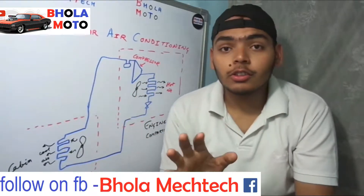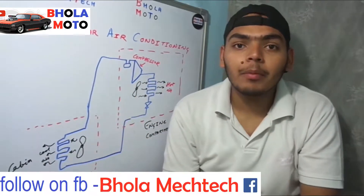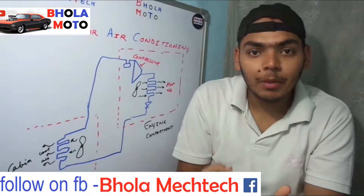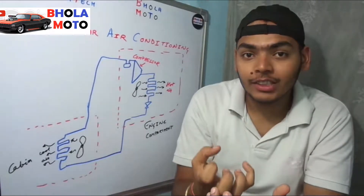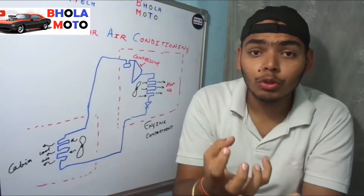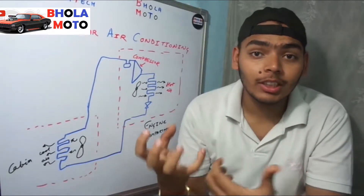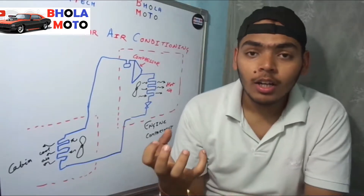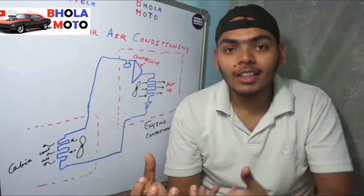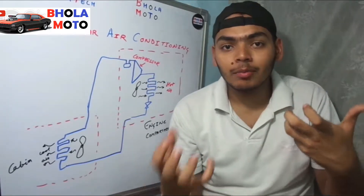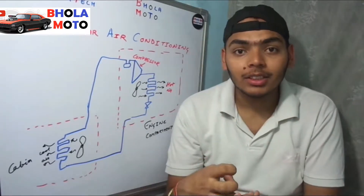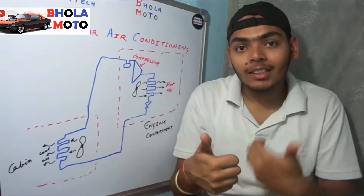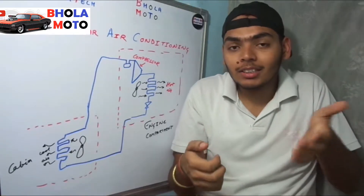So the first component is the compressor. The compressor increases the pressure of the refrigerant. Most commonly the refrigerant is R134a, and when it increases the pressure the temperature also increases.